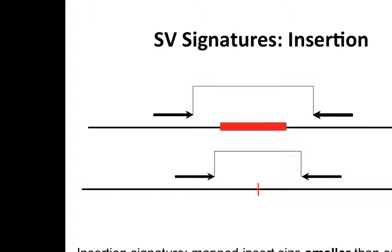The opposite event is an insertion, where a red box represents sequence inserted into the donor that's not in the reference. BWA maps the pairs much closer together because it's not accounting for this insertion — the mapped distance will be roughly 300 minus the inserted sequence length. Insertions are harder to find because for a 10,000 base pair insertion, you won't have reads spanning from one end of the insertion to the other. It's generally easier to find deletions using these methods than insertions.